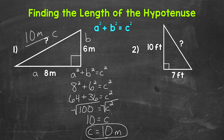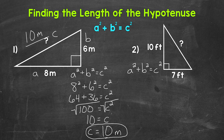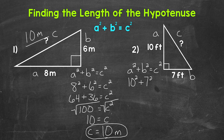Let's move on to number two, where we have a right triangle and again we need to find the length of the hypotenuse. We are given the two legs: 10 feet and 7 feet. So let's use a squared plus b squared equals c squared in order to find the hypotenuse. Let's call this leg a, this leg b, and then the hypotenuse is c. Now we can plug in and work through this equation. So for a we have 10 feet — plug in 10 for a, so 10 squared — plus 7 feet for b, so plug in 7 for b — 7 squared equals c squared.